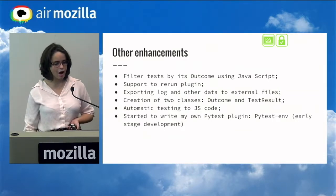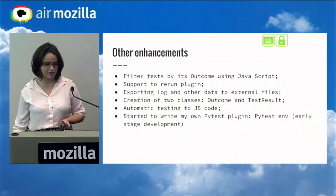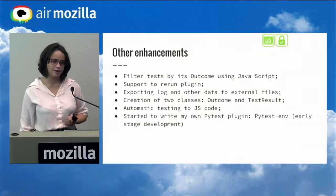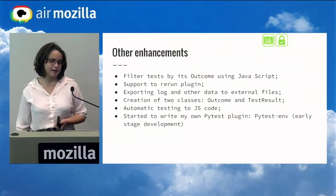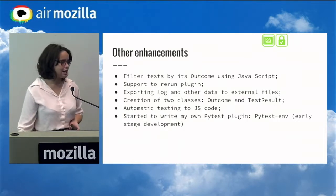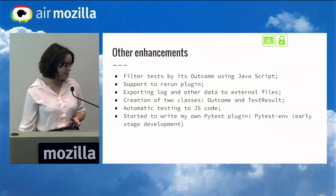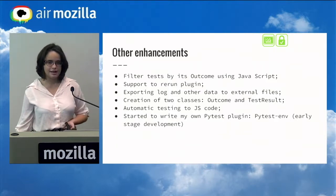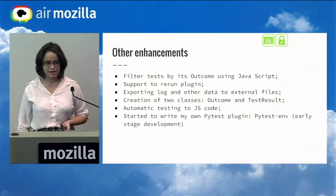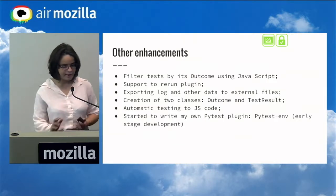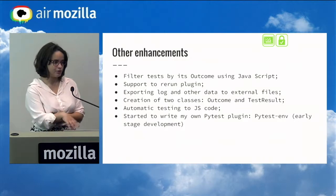We also worked on exporting logs and other external data to external files. There was an issue on our GitHub repository asking for that enhancement. Similar to what we did for images to support CSP, we did the same for other data formats as well, like JSON and text, and also the logs. It can now create a text file so you can go there and get the log.